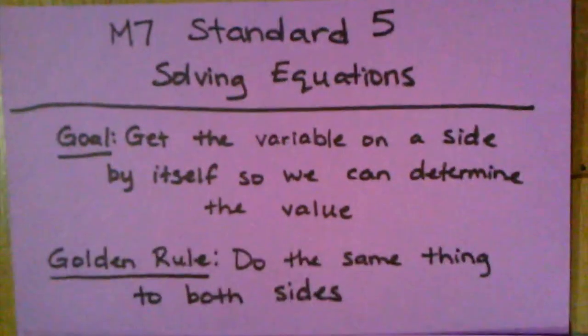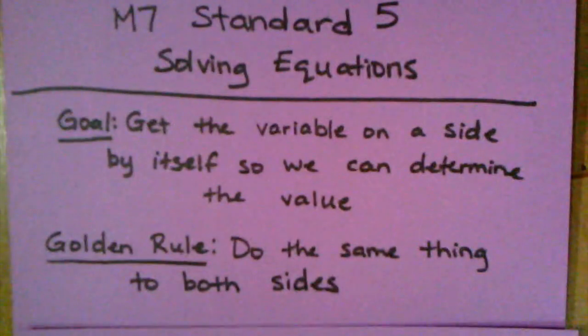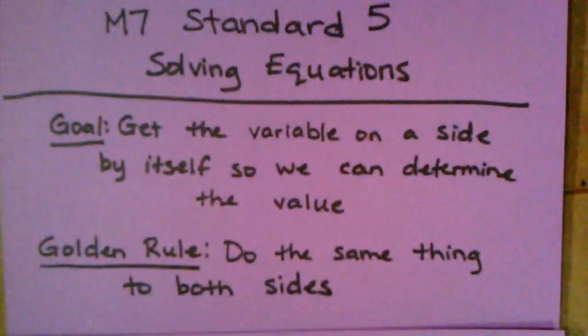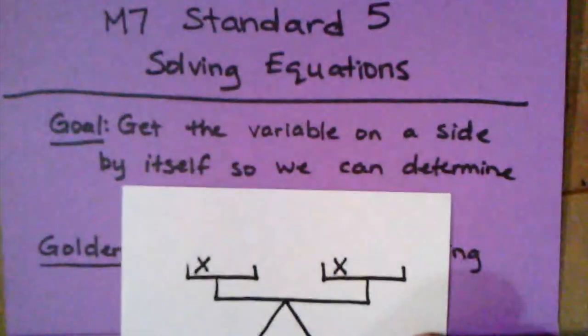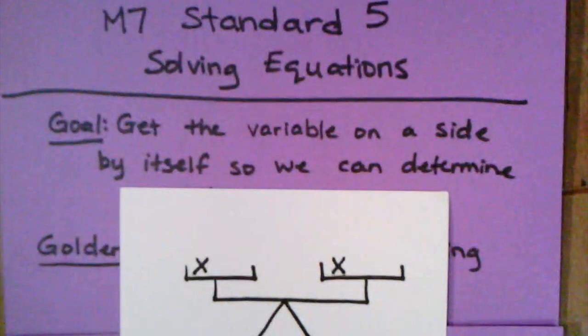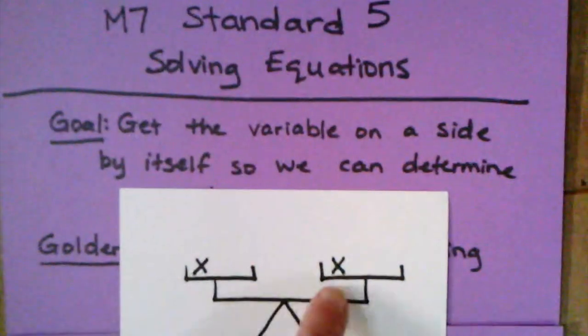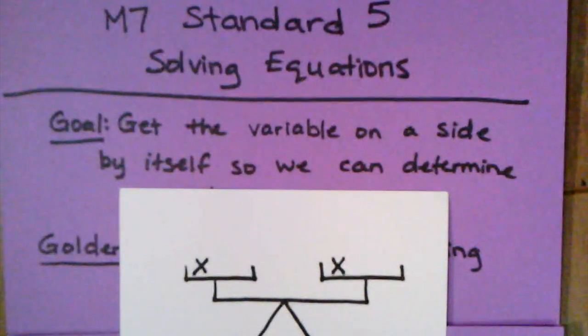The golden rule for solving equations is that you must do the same thing to both sides. The reason this is our golden rule is because we want to imagine our equation like a scale. I've drawn a picture here that would be used as balance. Right now it's saying that X is equal to X and this is a true statement so our balance is equal.